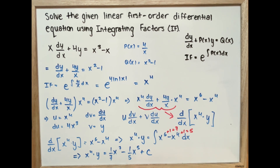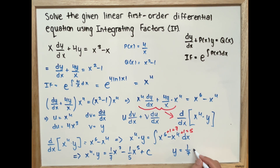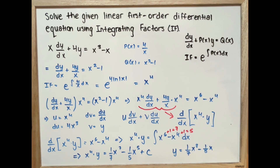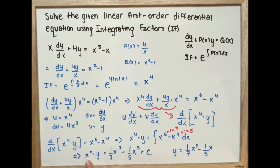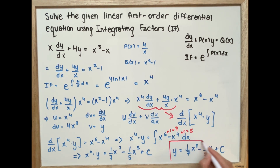Now we rewrite this in terms of y by dividing through by x to the power of 4. So y equals 1 over 7 times x to the power of 3, minus 1 over 5 times x to the power of 1, plus C. Since C divided by x to the power of 4 is still a constant, we just write C. This is our final answer.